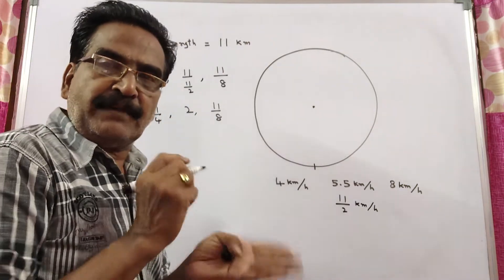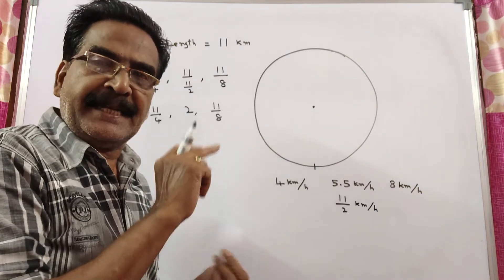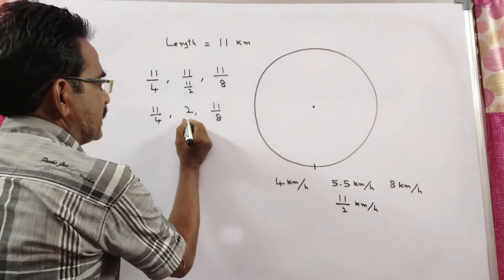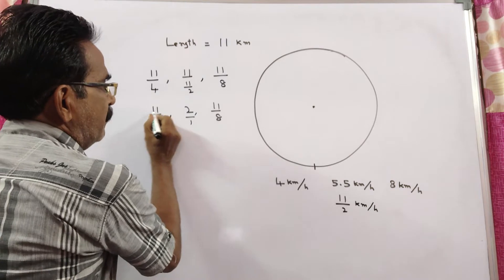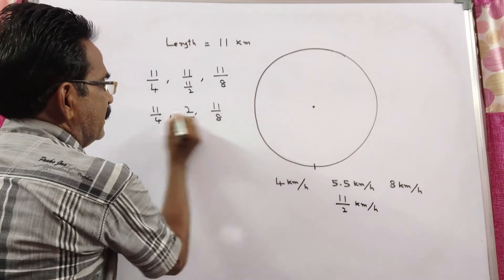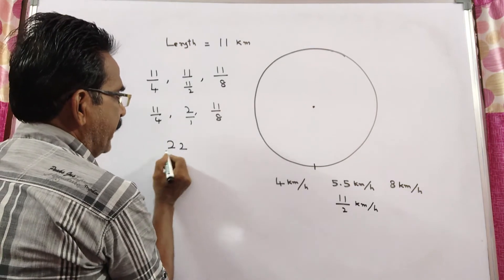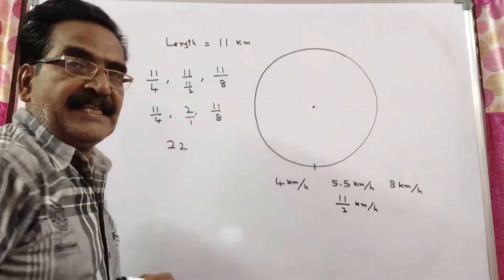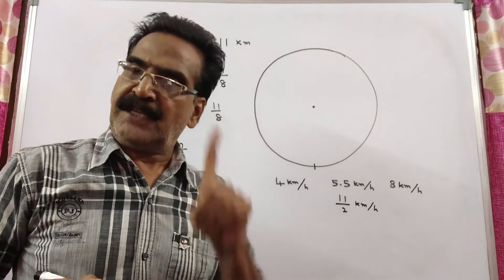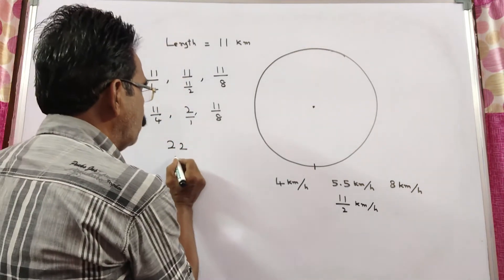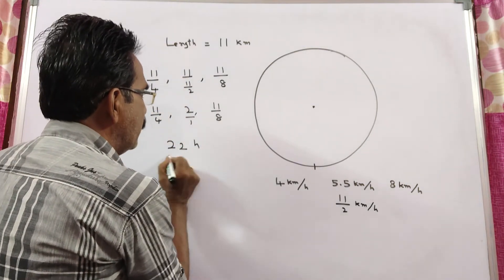LCM of fractions equals LCM of numerators divided by HCF of denominators. LCM of 11, 2, and 11 is 22. HCF of 4, 1, and 8 is 1. So 22/1 equals 22.